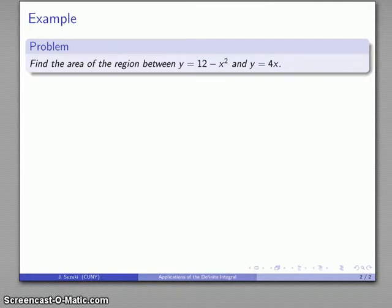So let's say I want to find the area of the region between y equals 12 minus x squared and y equals 4x. The way to do this problem wrong is to skip the first step. The way to do the problem correctly is to start off by graphing the region.